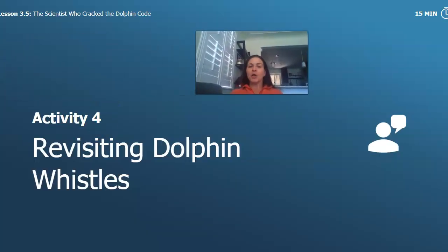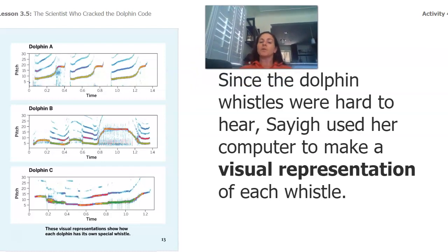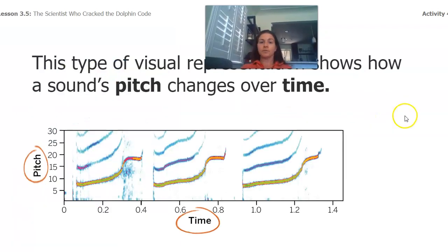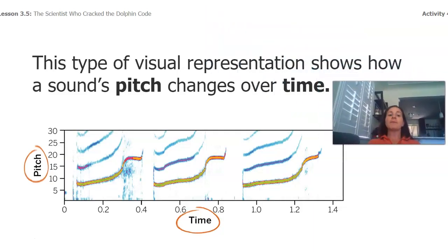All right, welcome back. We're going to go back to those same dolphin whistles and we're going to do a little bit of exploration with them. Since the dolphin whistles were hard to hear, Sayig used a computer to make visual representations of each whistle. These are actually the visual representations of the three dolphins that we listened to. This type of visual representation shows how a sound's pitch changes over time.